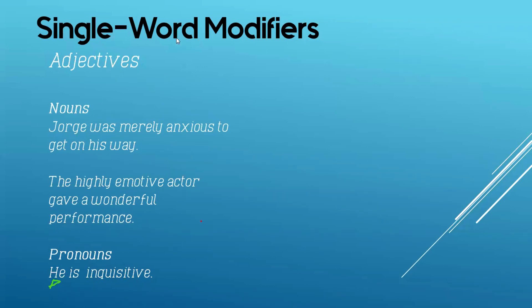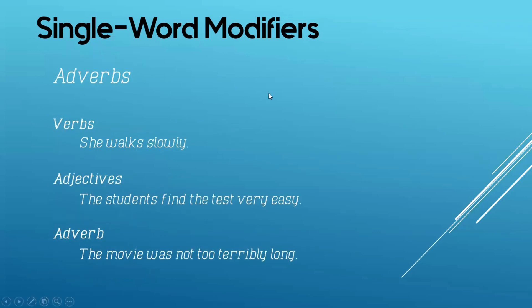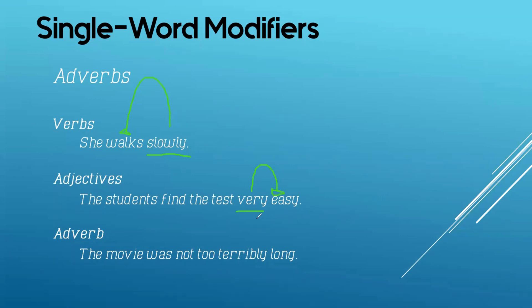Now let's go to another type of modifier — another one-word modifier — what we call adverbs. Adverbs modify verbs, adjectives, or another adverb. Sentence number one: 'She walks slowly.' What is the adverb? You are correct — slowly, modifying the verb walks. How does she walk? Slowly. How about the second sentence? 'The students find the test very easy.' The adverb is very, modifying the adjective easy. How easy? Very easy.